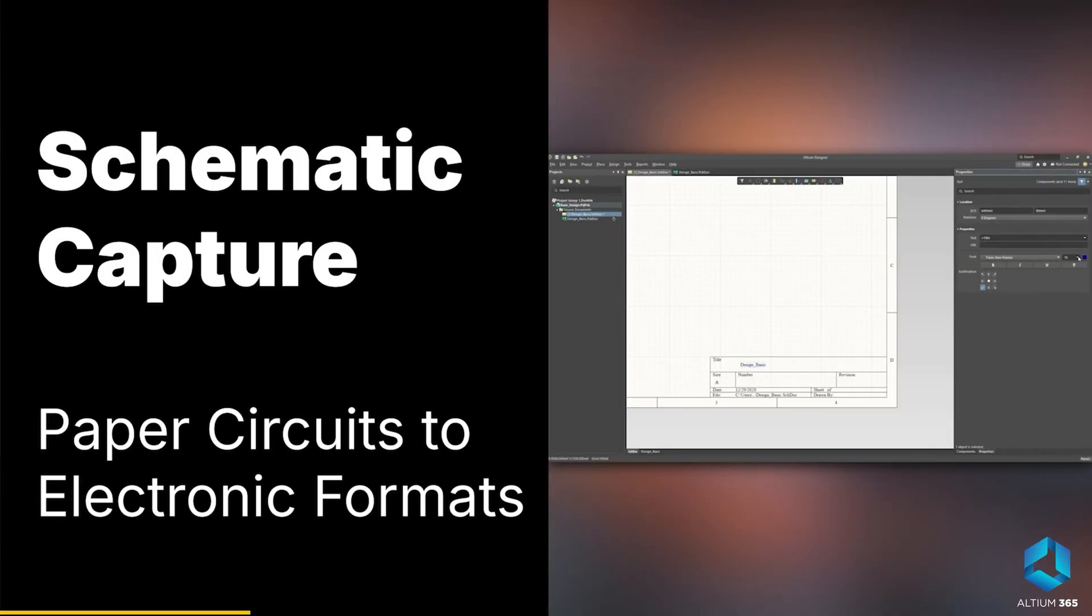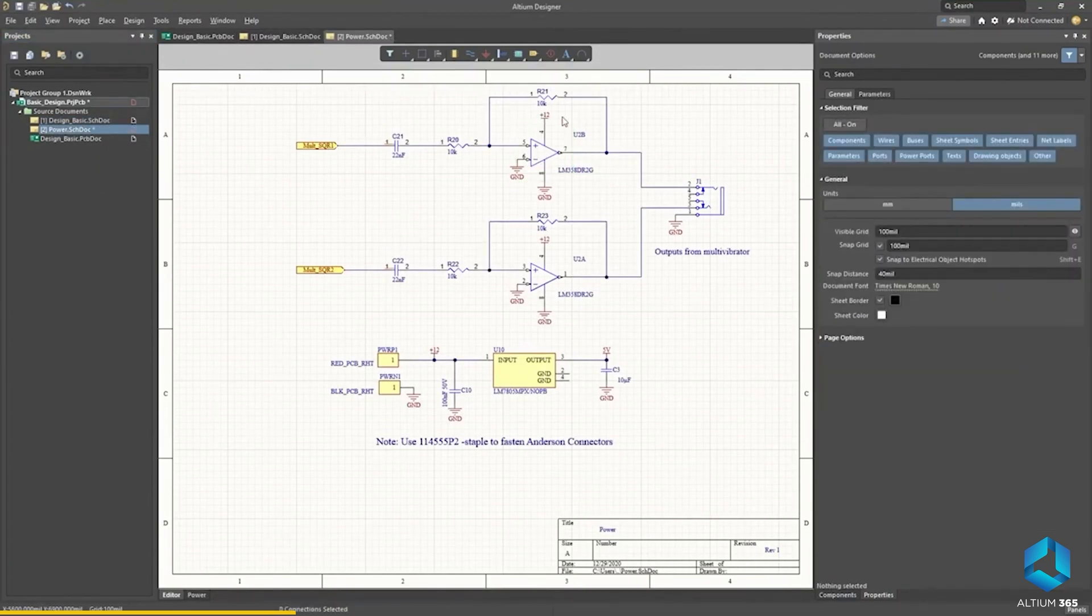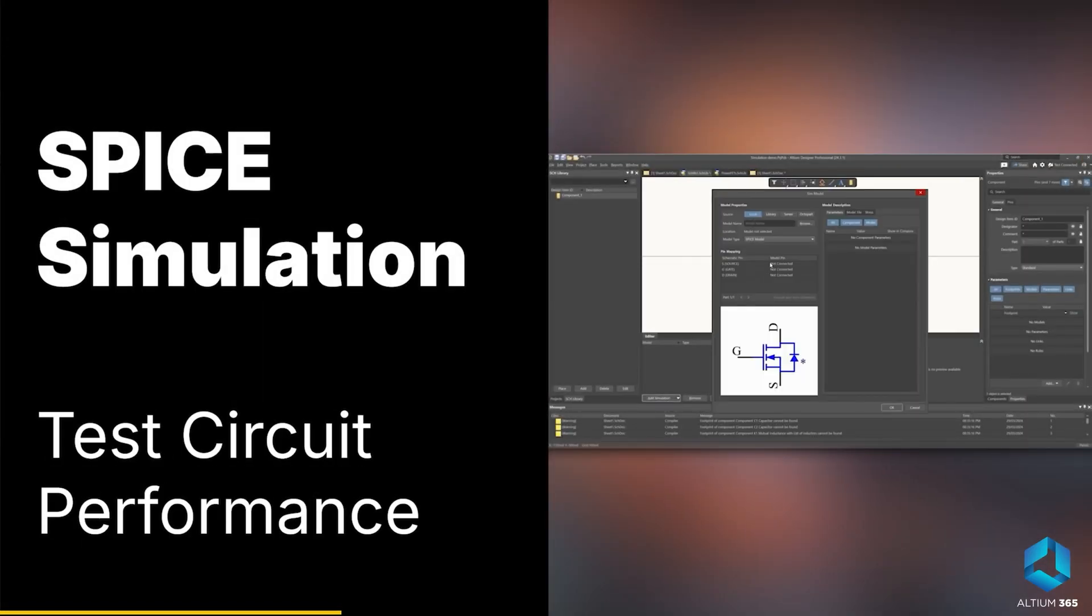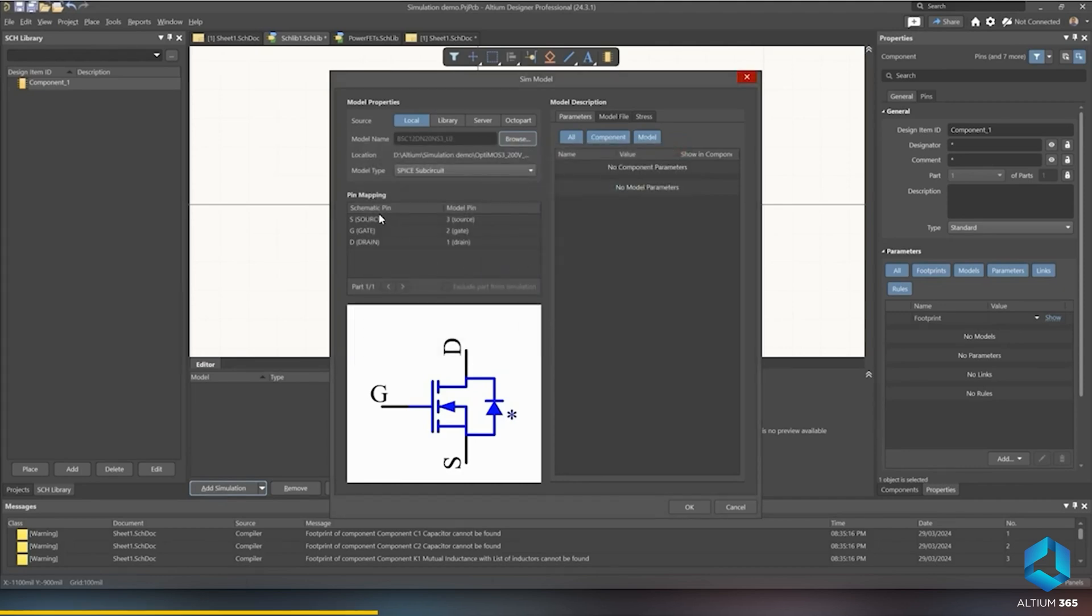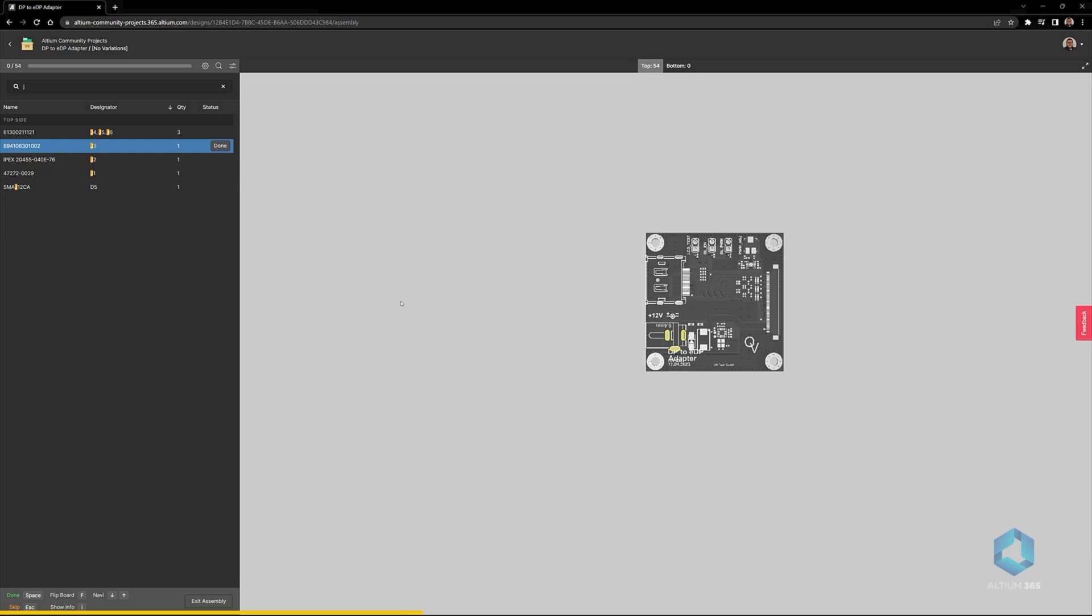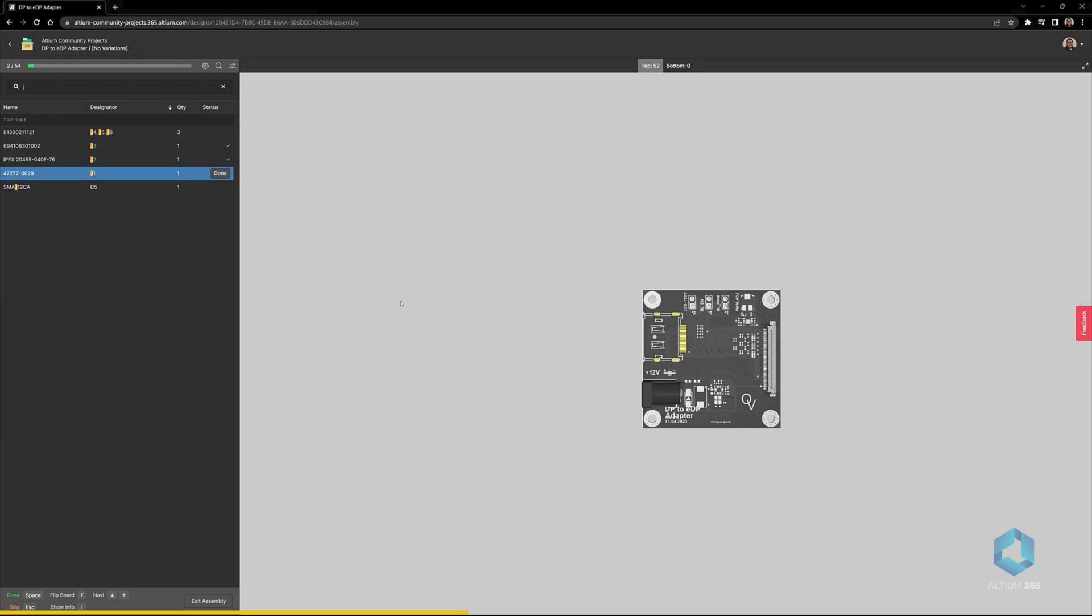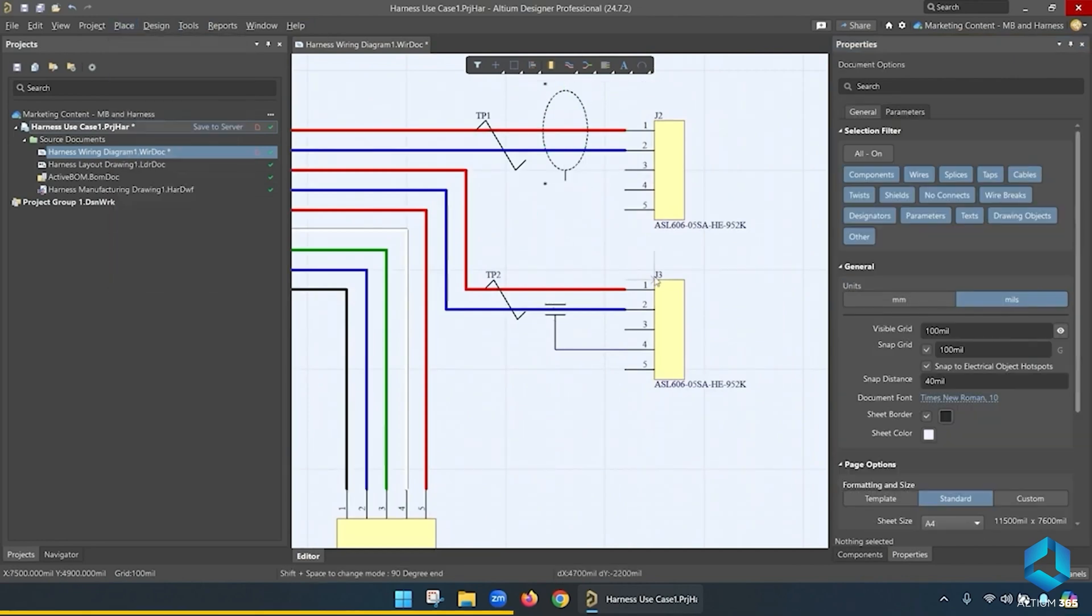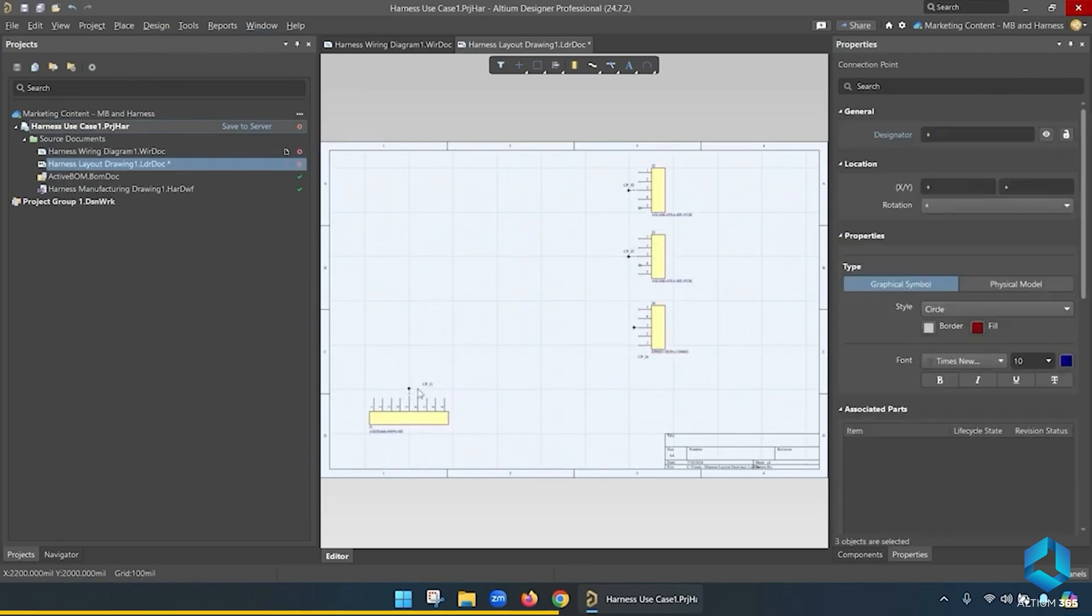It starts with schematic capture, where we transform our paper circuit to a proper design, which is ready for simulation and layout. Then we can run SPICE simulations to test our design, to check the performance and catch any mistakes before they cost us time and money. And after that, we can directly optimize component placement on PCB and design layout with advanced routing tools. It even helps with wiring harness design, where we can plan, design and document our wiring harness, which connects PCBs with each other.